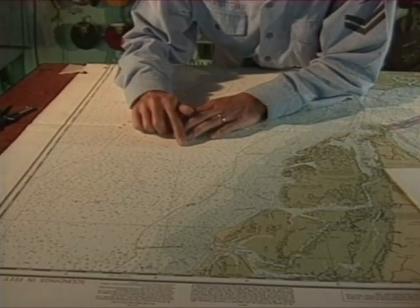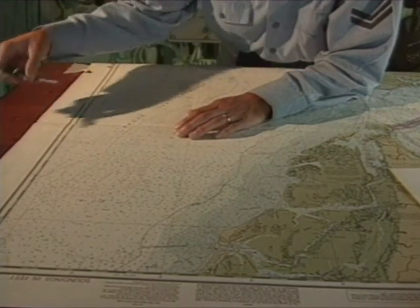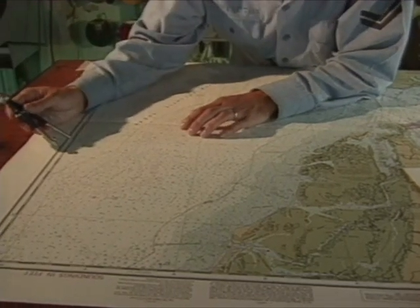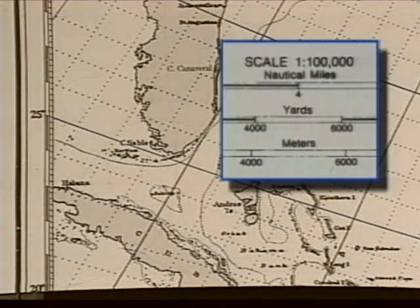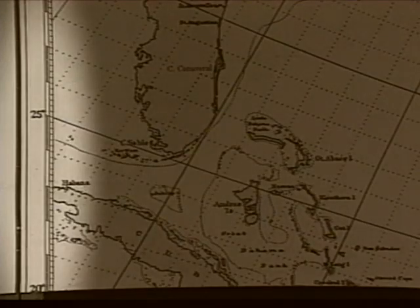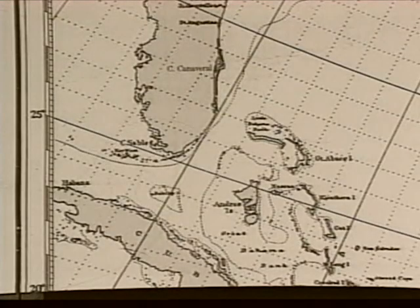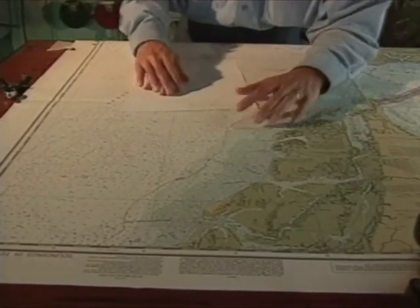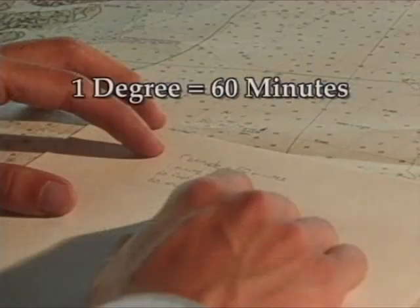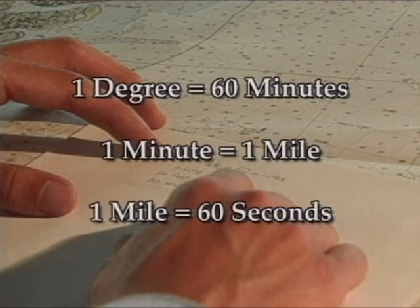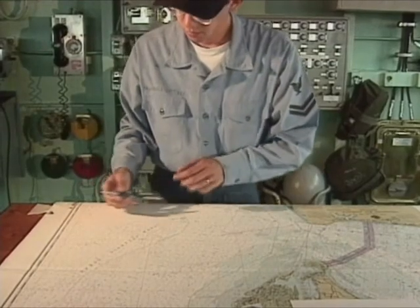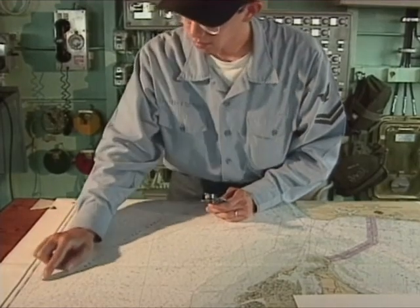Measuring distance is one of the principal uses of charts. This task is accomplished with the aid of a pair of dividers. You will find distance scales in yards, miles, or meters printed in the chart margins. Distances can also be measured using the latitude scales at either side of the chart. One degree of latitude equals 60 minutes, each minute equals one mile, and therefore one mile can be divided into 60 seconds. When measuring distances, you always use the latitude scales.